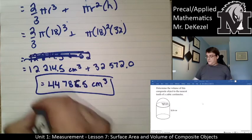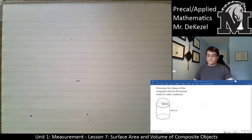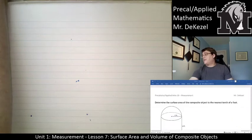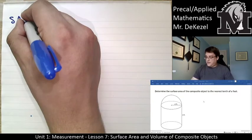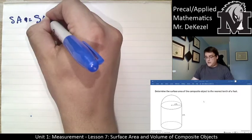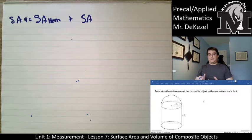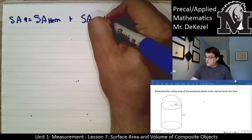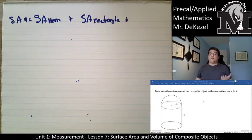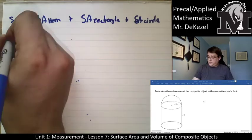That is the volume of that composite object. Let's move on to the next question. We're going to determine the surface area of a very similar object — different dimensions, but the same kind of shape. So the surface area total is equal to the surface area of a hemisphere, plus the surface area of the cylinder. If you think about a cylinder and cut it down the side and lay it flat, it's actually just a rectangle. And then we add the surface area of a circle on the bottom. Those are the three different parts.